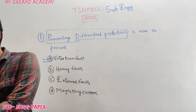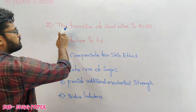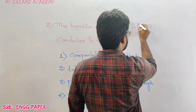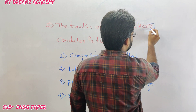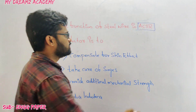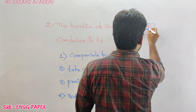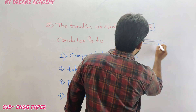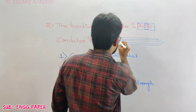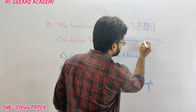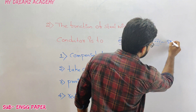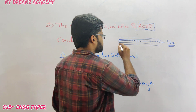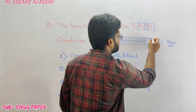Question number two: the function of steel wire in ACSR conductor. ACSR is nothing but Aluminum Conductors Steel Reinforced. Generally the conductor has a number of strings, with the steel in the middle one.